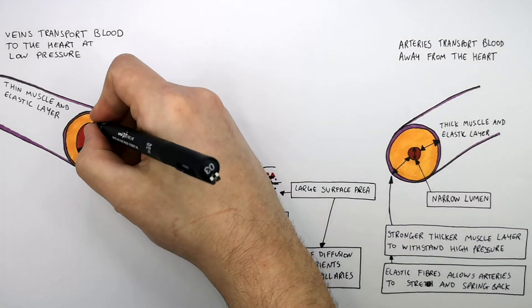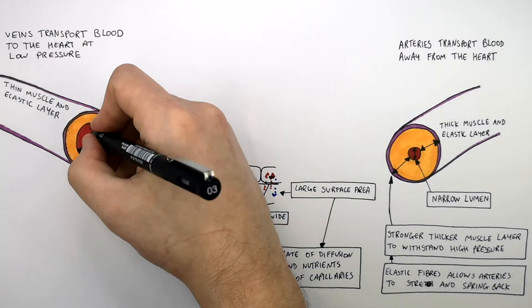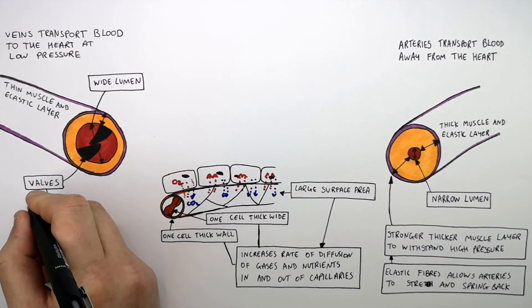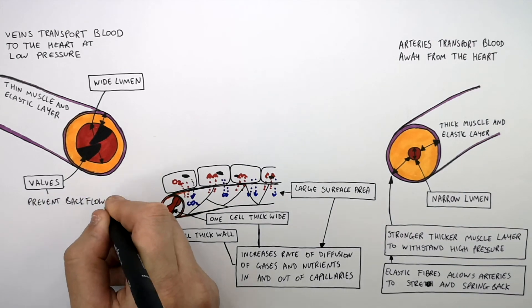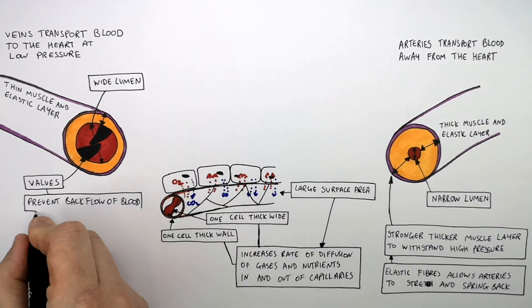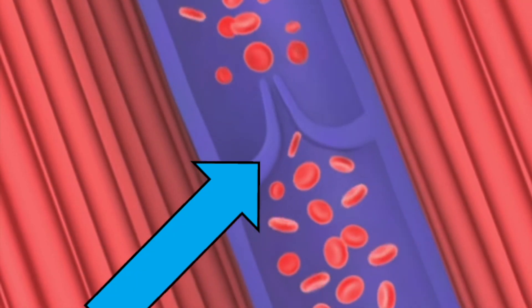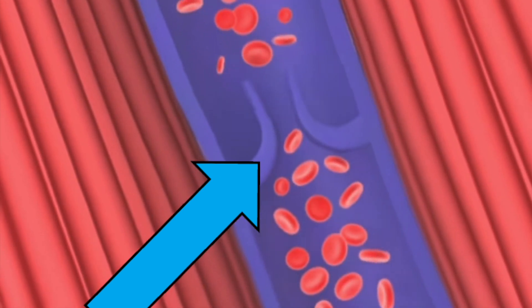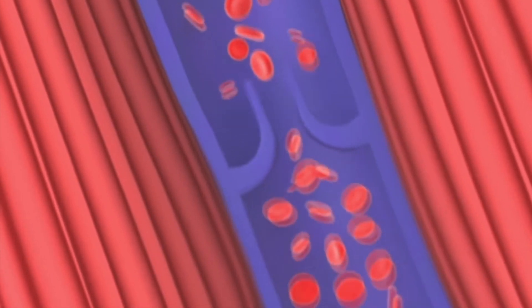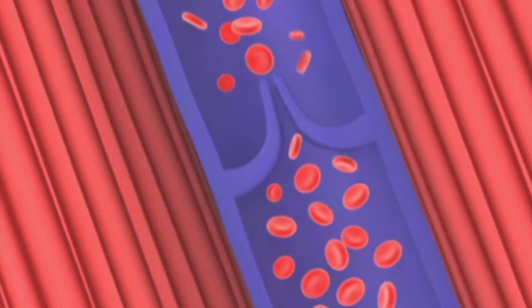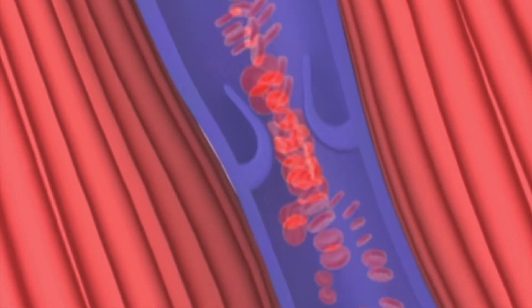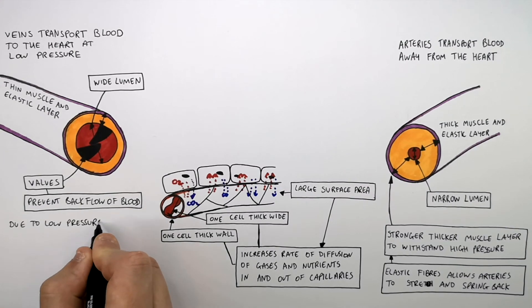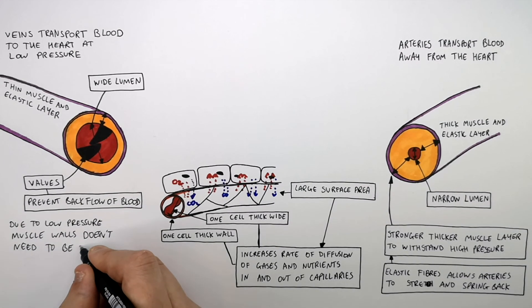Veins have a wide lumen and valves. Valves prevent the backflow of blood, just like they do in the heart. The valves are needed because blood is being transported at such low pressure. Due to the low pressure, the muscle walls don't need to be as thick.